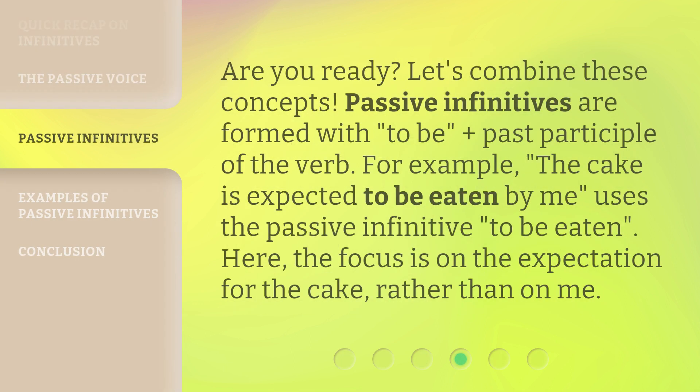Are you ready? Let's combine these concepts. Passive infinitives are formed with 'to be' plus the past participle of the verb. For example, 'the cake is expected to be eaten by me' uses the passive infinitive 'to be eaten.' Here, the focus is on the expectation for the cake, rather than on me.